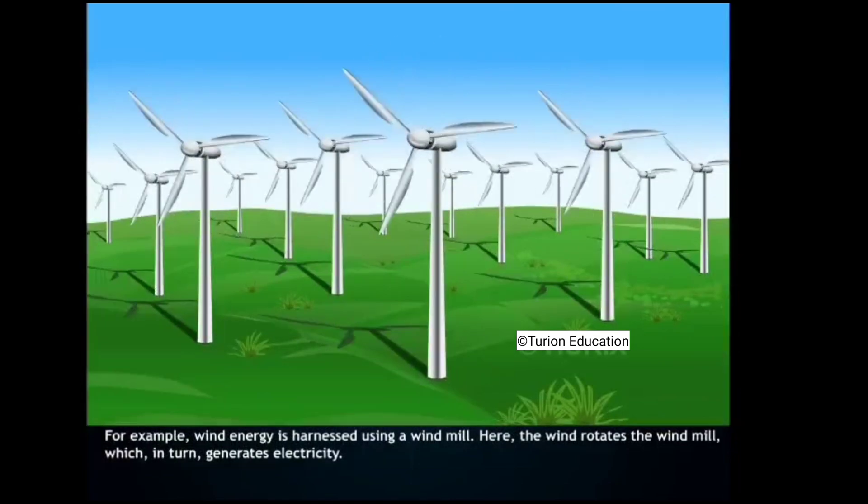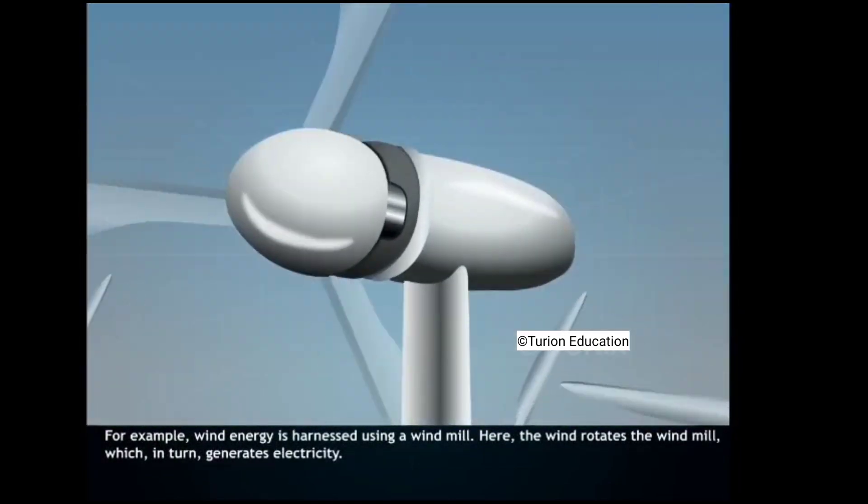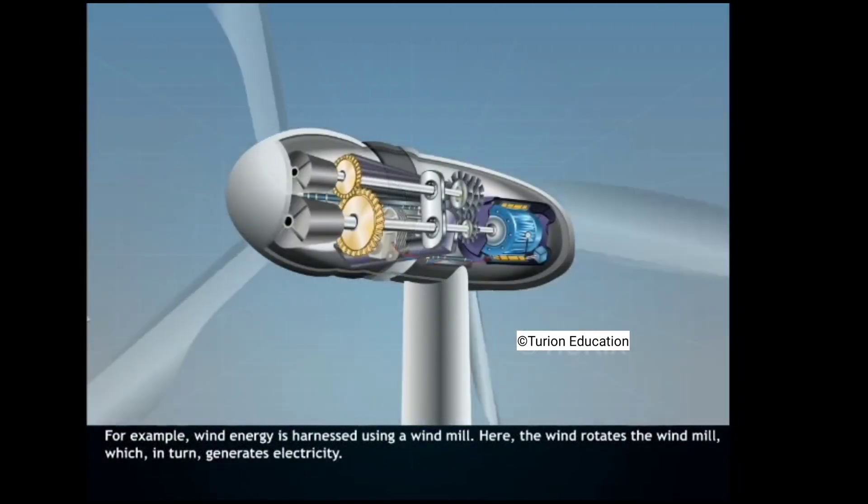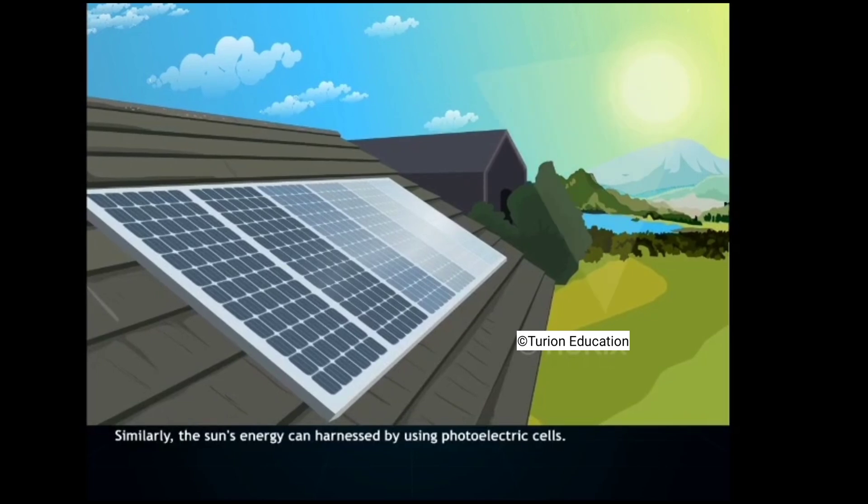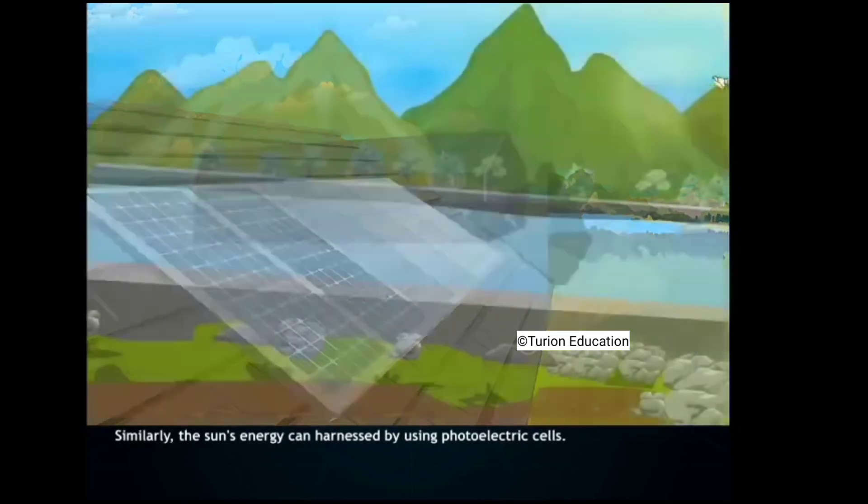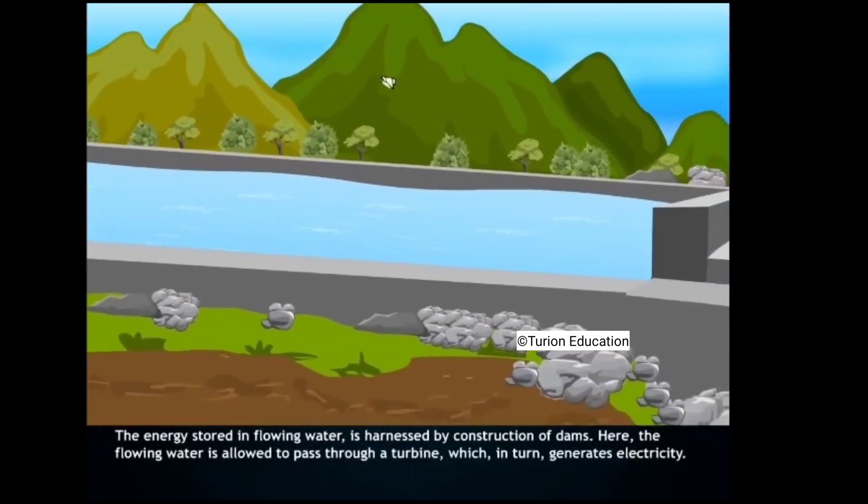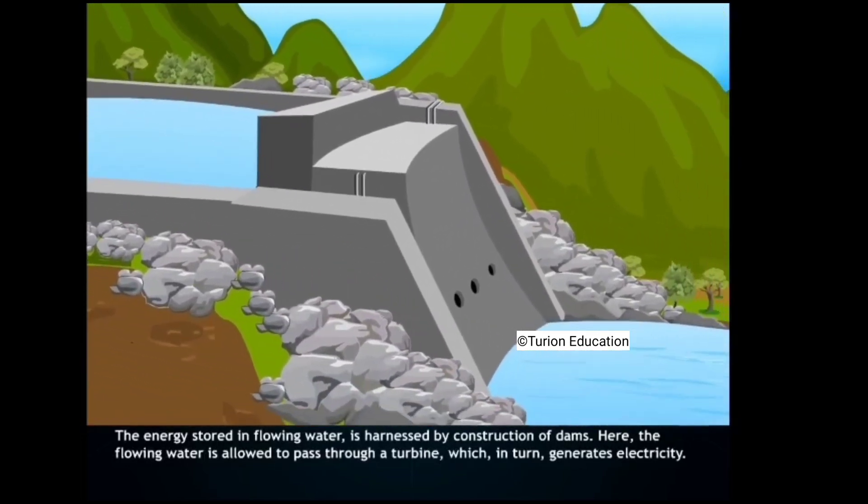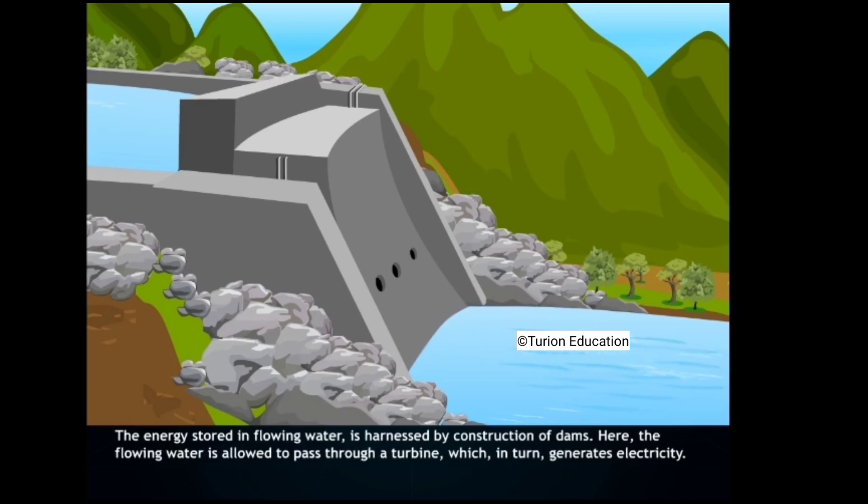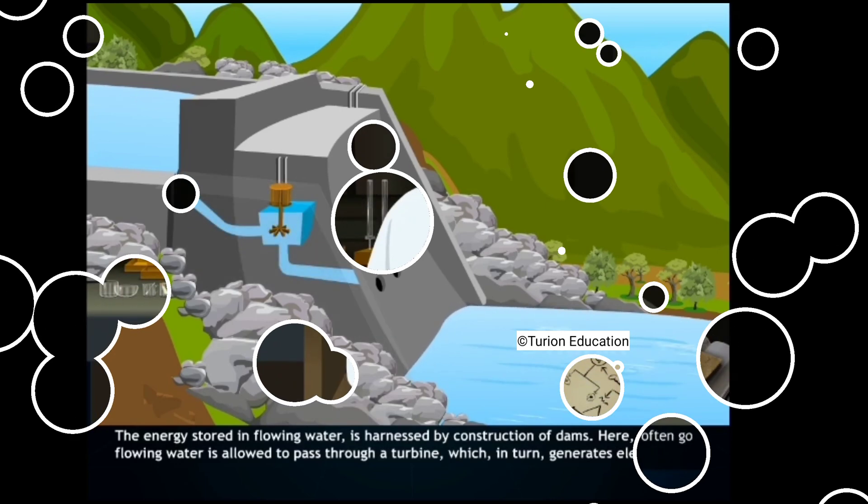For example, wind energy is harnessed using a windmill. Here, the wind rotates the windmill which in turn generates electricity. Similarly, the sun's energy can be harnessed by using photoelectric cells. The energy stored in flowing water is harnessed by construction of dams. Here, the flowing water is allowed to pass in hand.